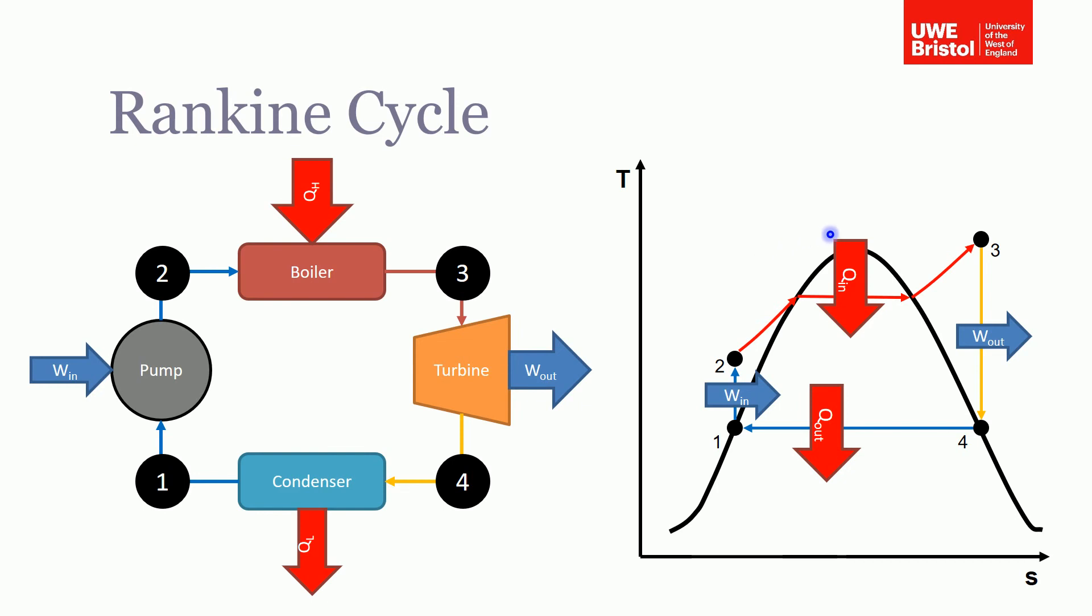And then we finally condense it back to state one. So as I say, this is the principle of the Rankine cycle, and we're then going to use this cycle to analyze it, work out the thermal efficiencies and how we can improve the efficiencies of this cycle.